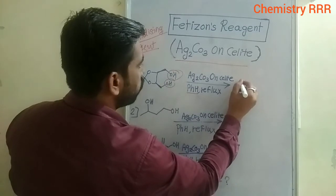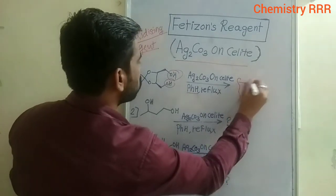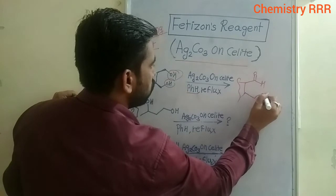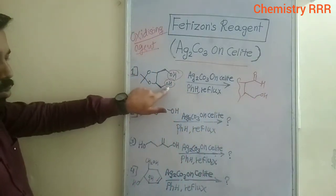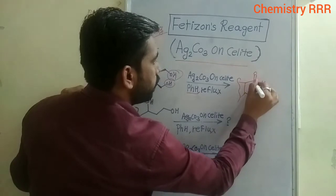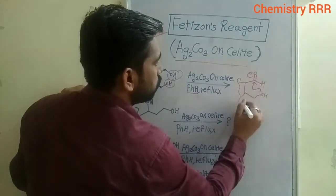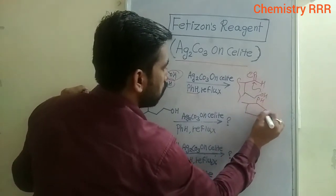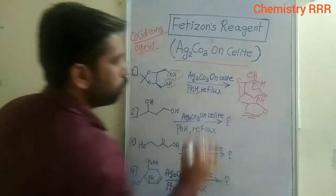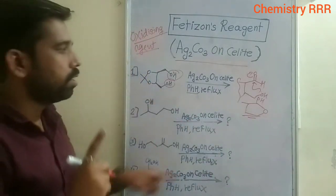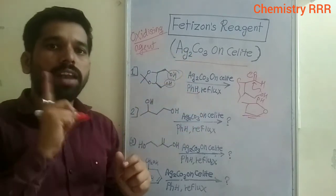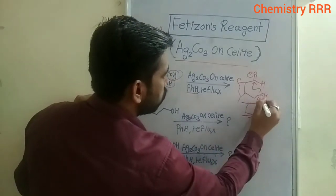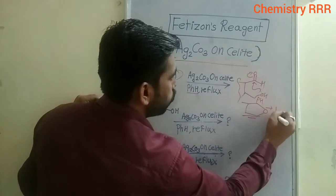One of the alcohols gets converted into the aldehyde. After that, the second OH group attacks at the electron-deficient carbonate center, and we get the corresponding lactone. Remember that Fétizon's reagent converts a diol to the corresponding lactone — this is also important.